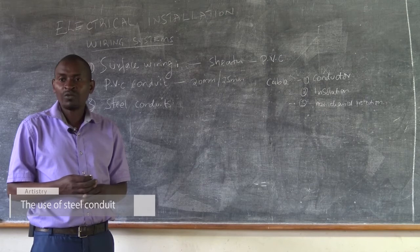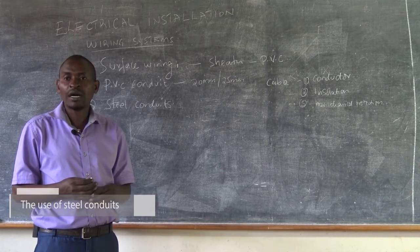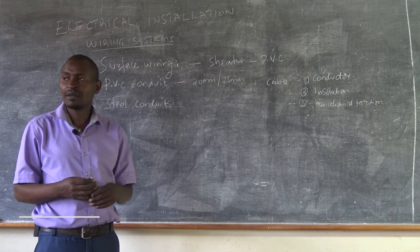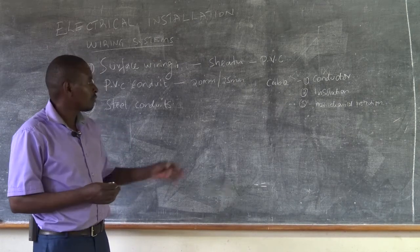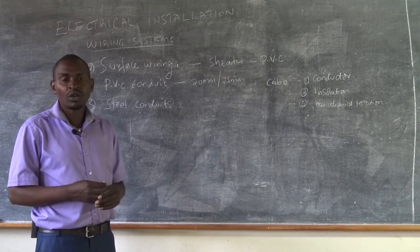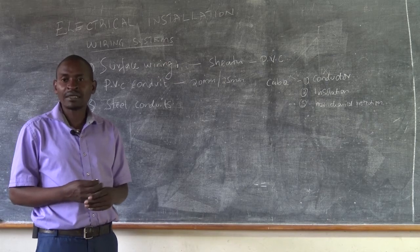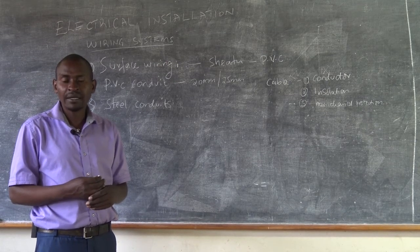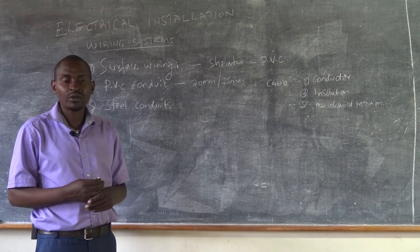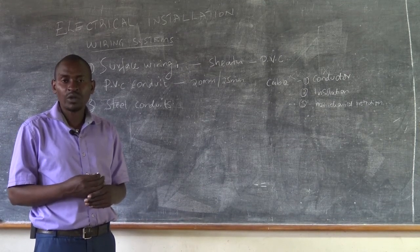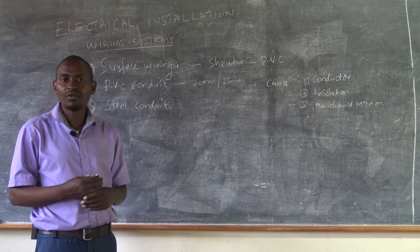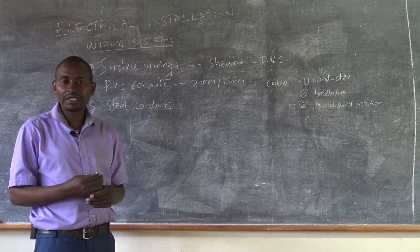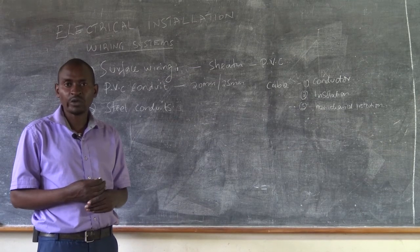Sometimes it is not possible to have all the wiring system done on the wall because some of the machine might be at the center of the room and you need to supply it. In such a scenario, you find that the most applicable means of supplying that equipment or that machine would be the use of a steel conduit.